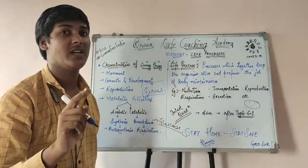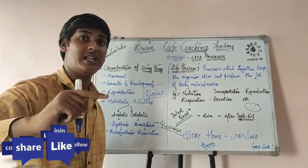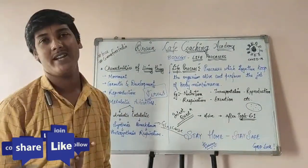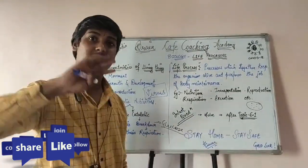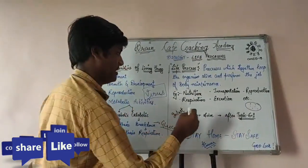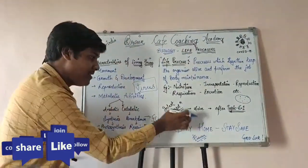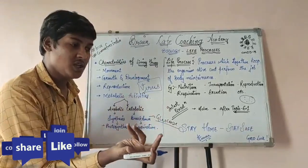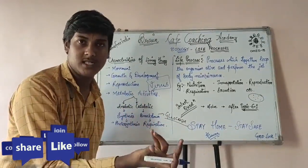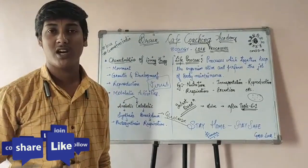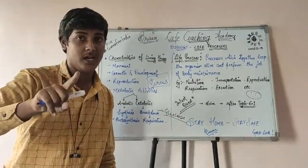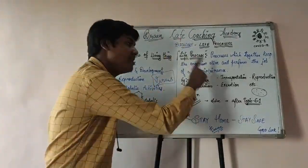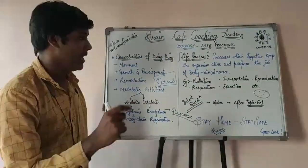Is diffusion sufficient in a multicellular organism? No, because in a multicellular organism diffusion alone is not sufficient. In a unicellular organism, the single cell is in direct contact with the environment. While in the case of a multicellular organism, not every cell is in contact with the environment — so diffusion is not sufficient to meet requirements.